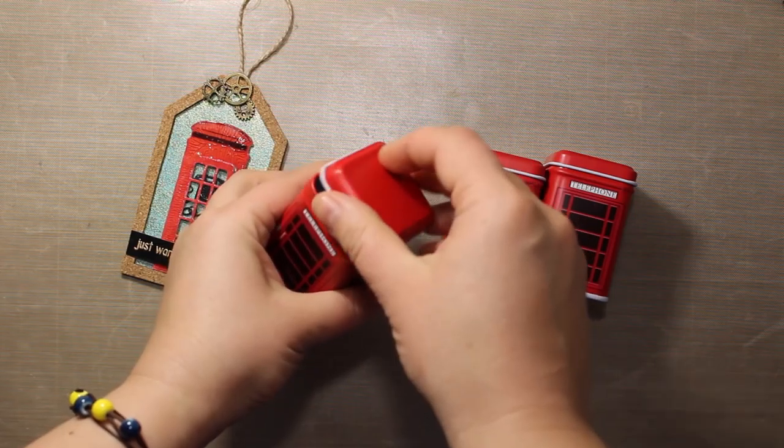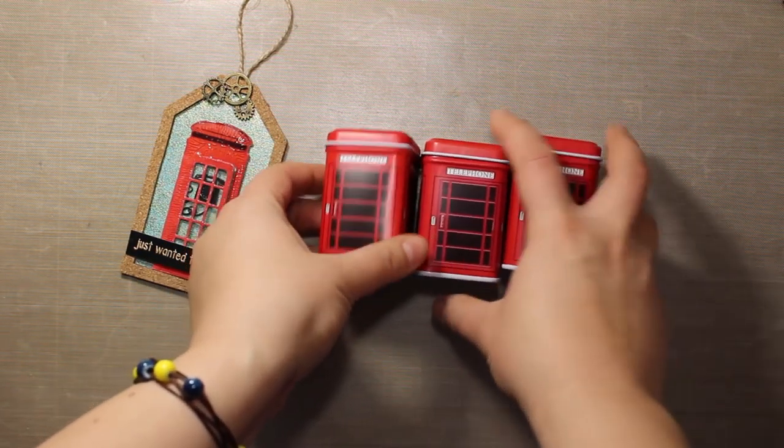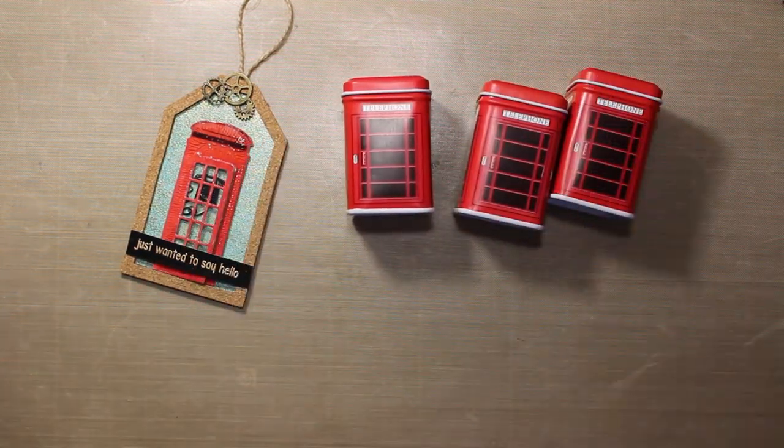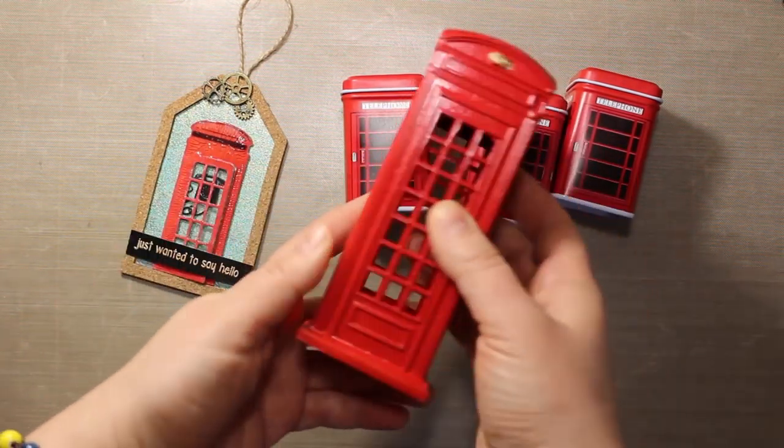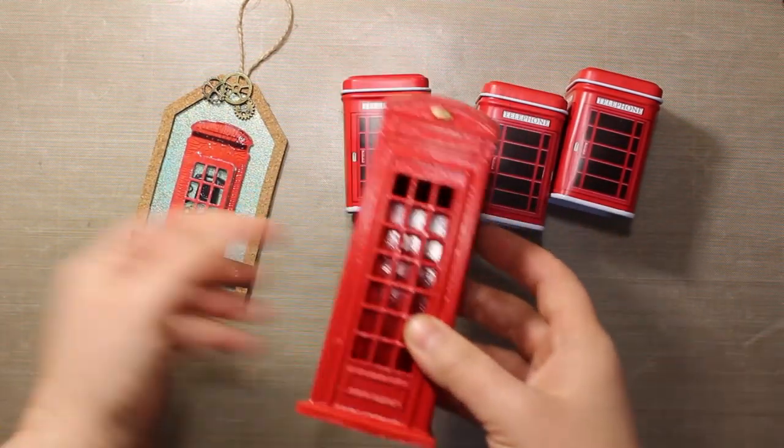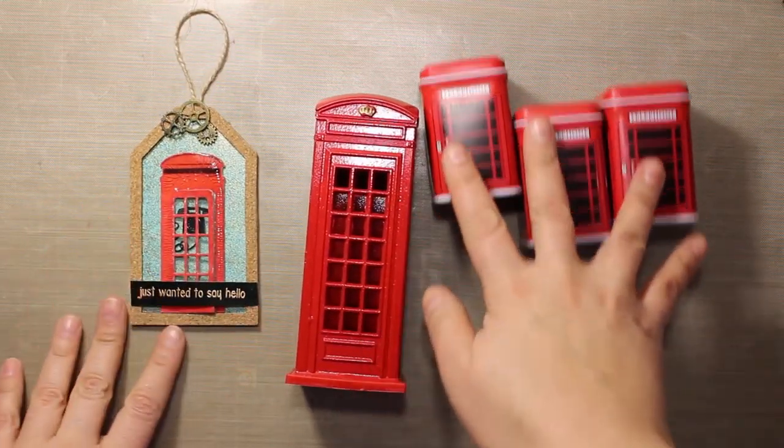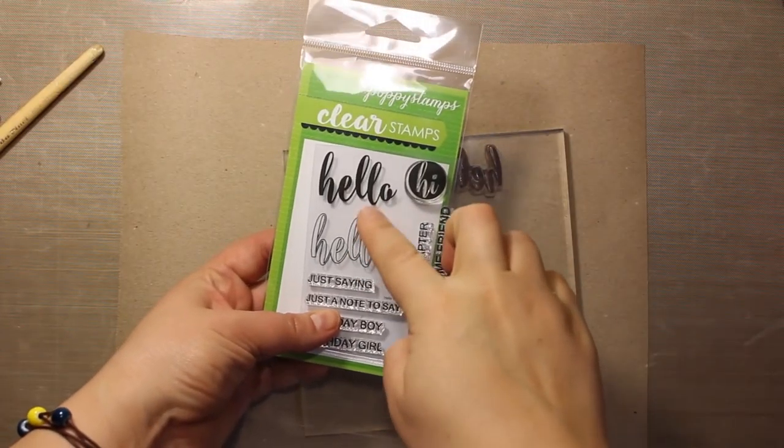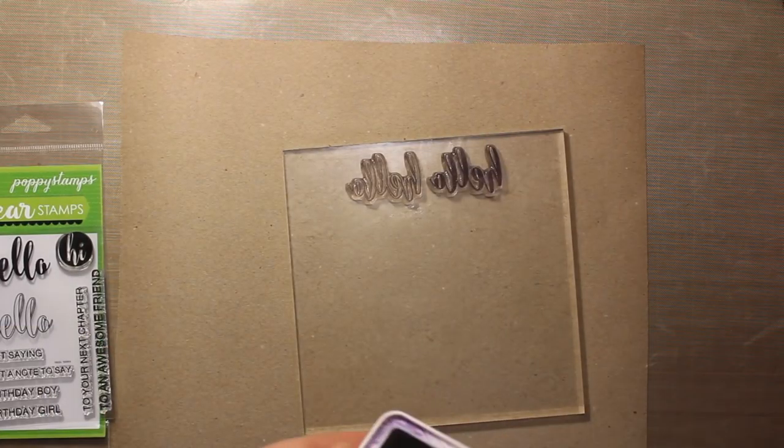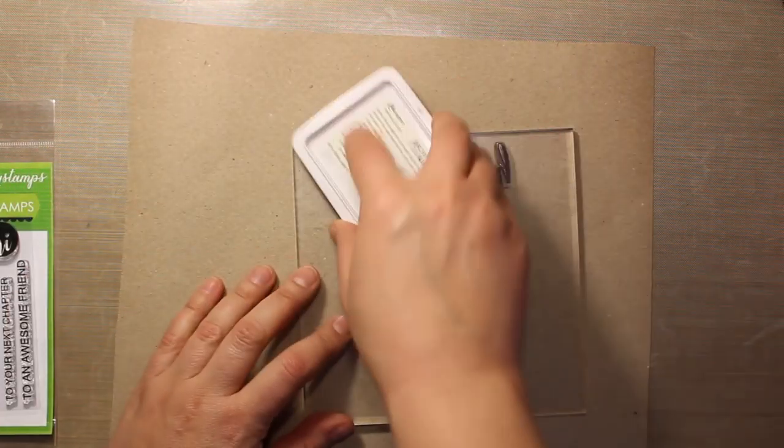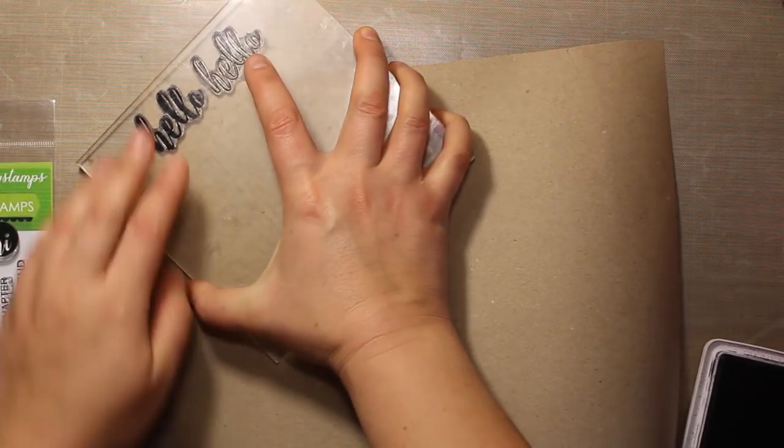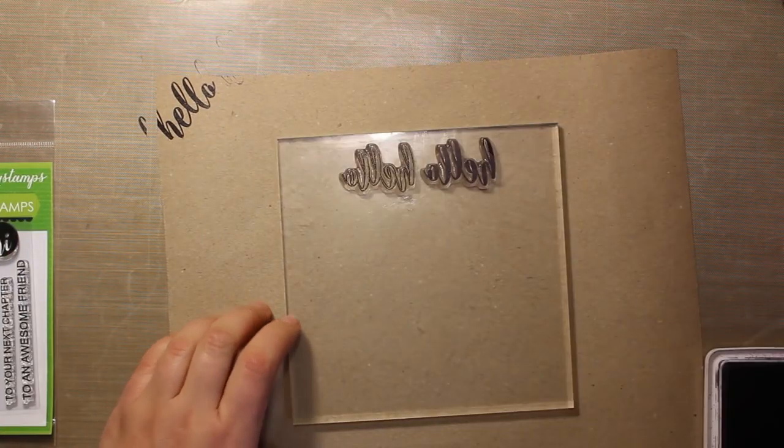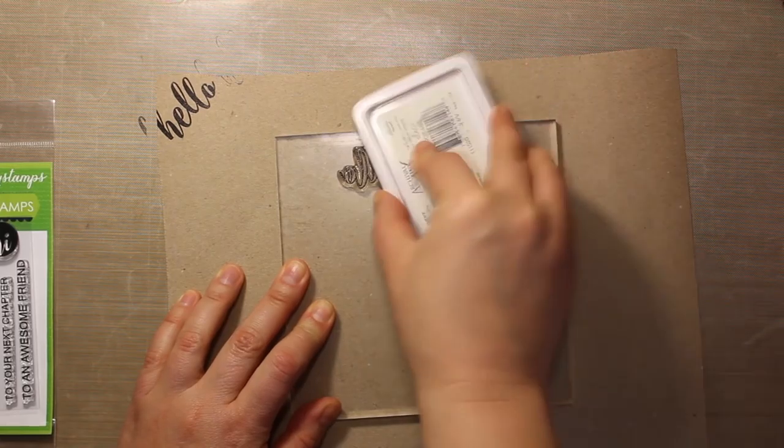But you're probably wondering what you can actually do with the phone booth tag. Well, since those booths are quite iconic, there are lots of goodies out there. For instance, those tin boxes are great for loose tea or ground coffee or spices, and this is actually a piggy bank also shaped like a telephone booth. Any of those could make pretty little gifts.